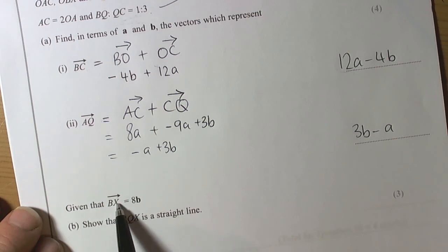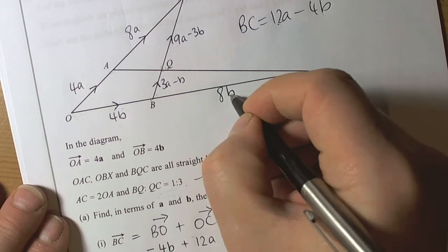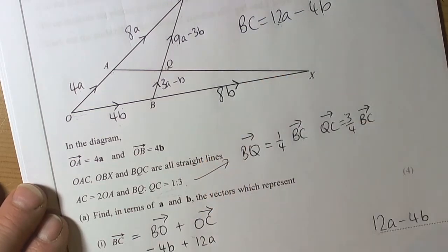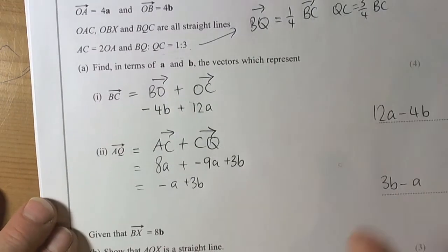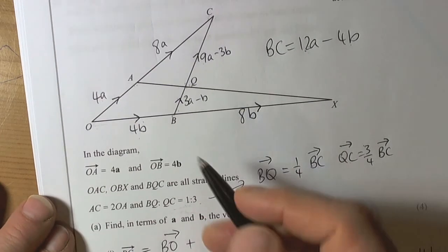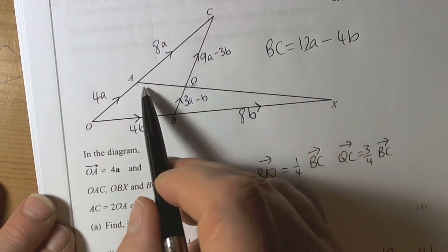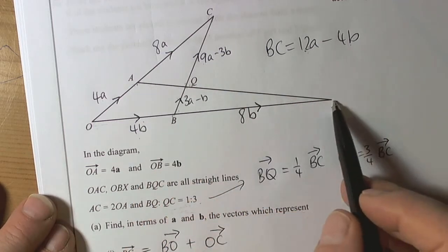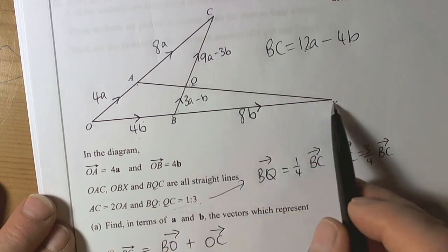Now for the last part. They're telling us that B to X is 8b, so we add 8b onto the picture. Always add the information to the picture to help us see what's going on. They're asking us to show that AQX is a straight line — so A to Q to X.